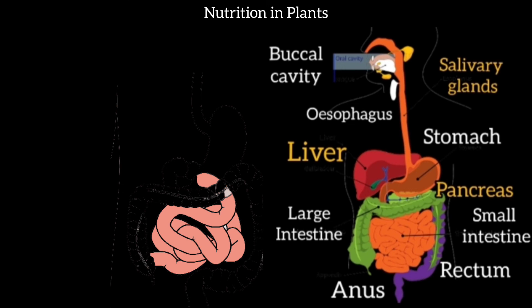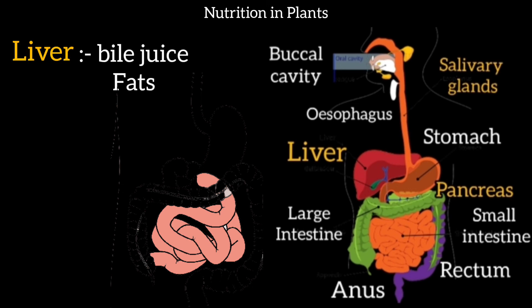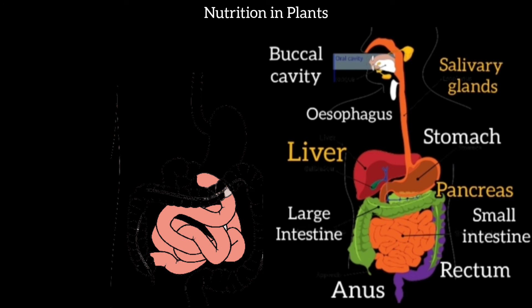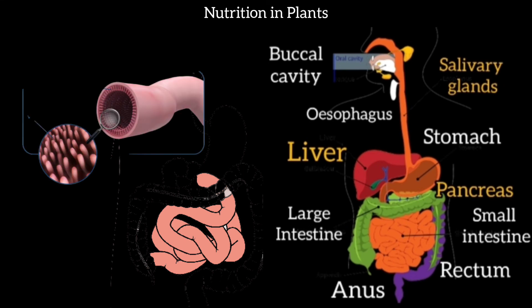To summarize the whole digestion process: in the buccal cavity, carbohydrate starch is converted to sugar — the first step of digestion. Then food travels through the esophagus to the stomach. In the small intestine, the liver secretes bile juice and the pancreas secretes pancreatic juice. Food digested in small intestine gives: carbohydrates → simple sugars/glucose, fats → fatty acids, proteins → amino acids. Food in solid form is converted into liquid form.